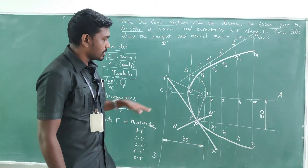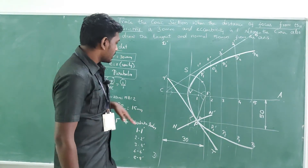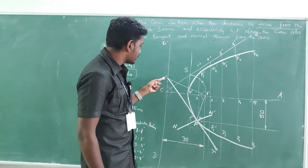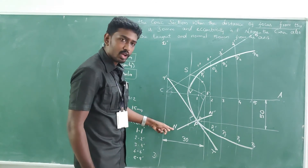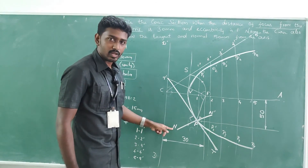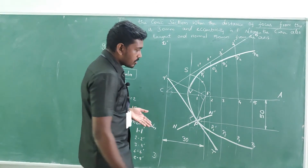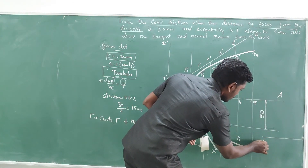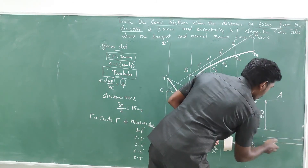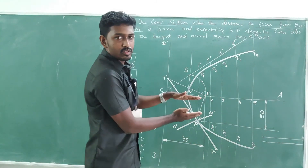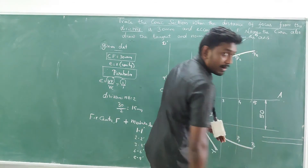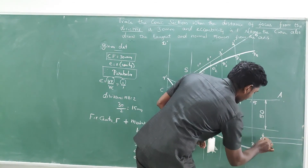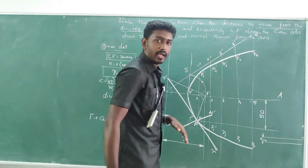Next, capture the notes. Write T-T' as tangent: draw guidelines with a 5 mm gap and write 'T-T' as tangent'. Then with the same 5 mm gap, write 'N-N' as normal'. Always maintain 5 mm gap between the guidelines.